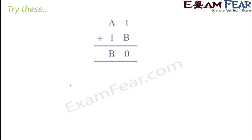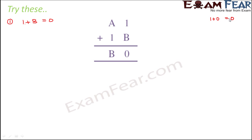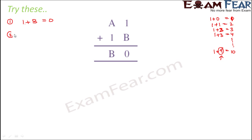This is the approach we follow to solve addition problems — always focus on the units place digits first. Let us try a few more problems. A1 plus 1B is equal to B0. Again, we first focus on the units place: 1 plus B should equal something whose units digit is 0. You can think about it: 1 plus 9 gives 10, whose units digit is 0. So 9 could be a possible value of B.